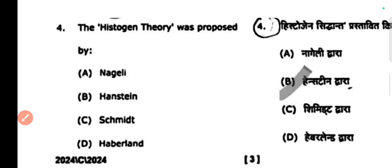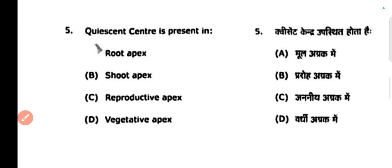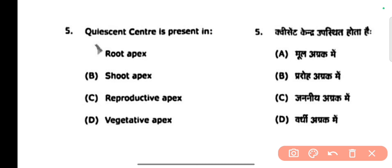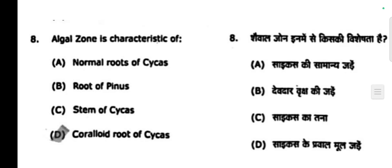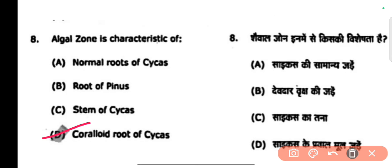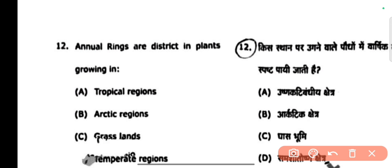Next question: the historical theory was proposed — who proposed it? Next question: coleorhiza is present in root apex. Next question: the algal zone is characteristic of the coral root of Cycas. Next question: annual rings are distinct when the plant is growing in a temperate region.